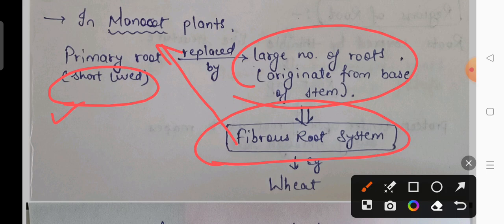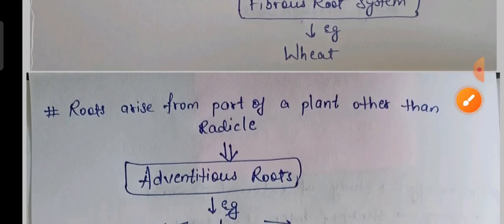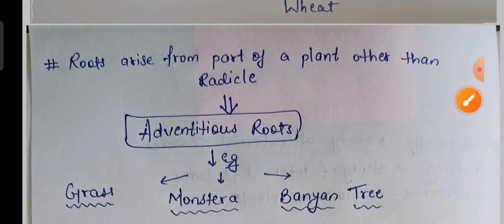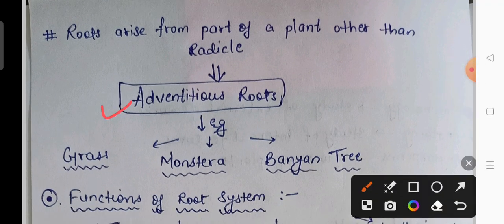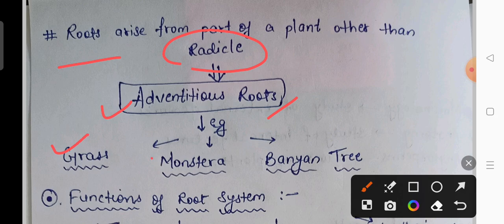In monocots, the fibrous root system example is wheat. There is another root system — the adventitious root system. Adventitious roots arise from parts of the plant other than the radicle, such as from the stem or leaves. Common examples include grasses, monstera, and banyan trees.